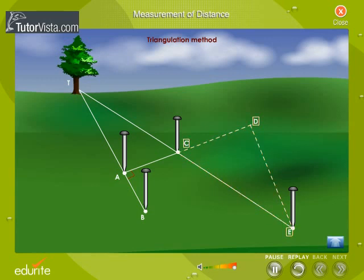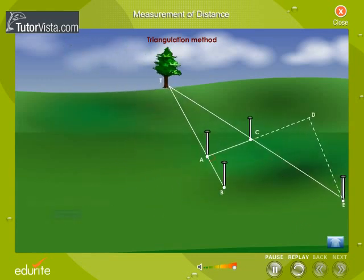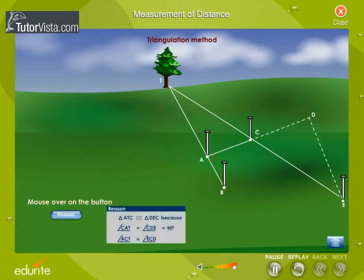The two triangles ATC and CED are similar. From the properties of similar triangles we get AT/DE = AC/DC. Now measure AC, DC and DE and calculate AT using the formula AT = (AC/DC) × DE.